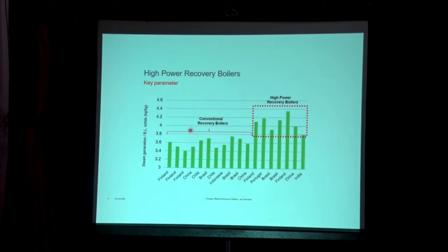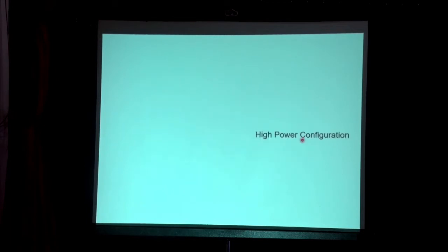With these high power features, we can increase the steam economy from around 3.4 up to 3.8 kg per kg of dry solids. This is how the high power configuration is built into the recovery boiler system.